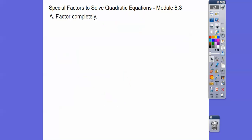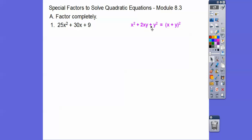Let's go ahead and factor some of these. Here I've got a perfect square trinomial — we can't GCF anything out. That's 5x times 5x on one end, and 3 times 3 on the other. It's a perfect square trinomial, giving us a binomial squared: (5x + 3)². Mentally check: 5x times 3 is 15x, doubled is 30x. There it is.